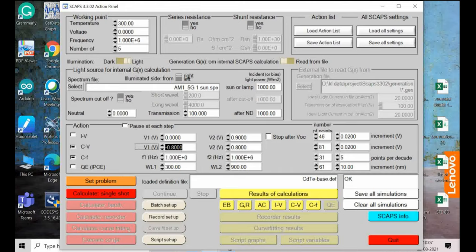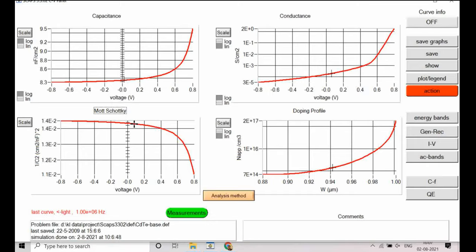And so now we go to CV, you can see capacitance as a function of voltage is being simulated. So you can see that after some 0.6 volt capacitance is started increasing. So capacitance behavior of p-n junction device is being simulated out.